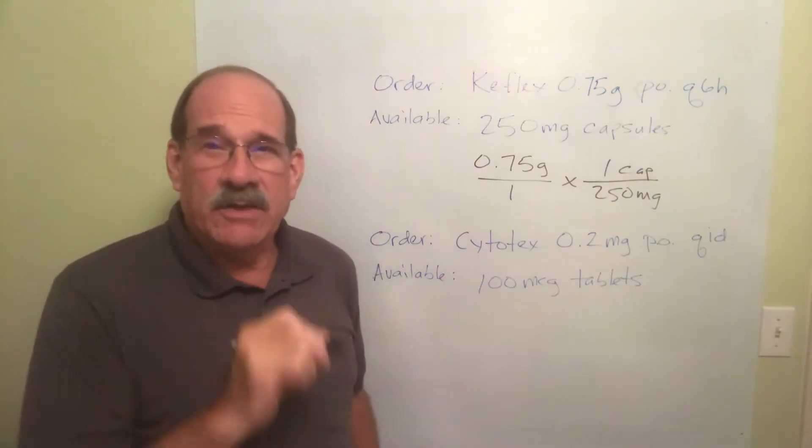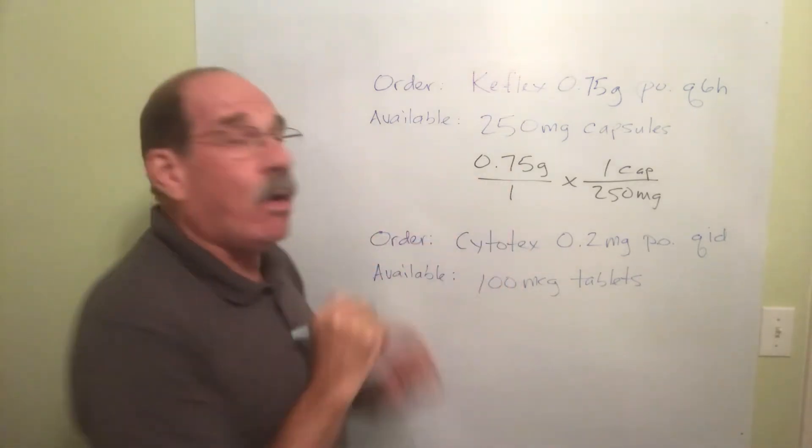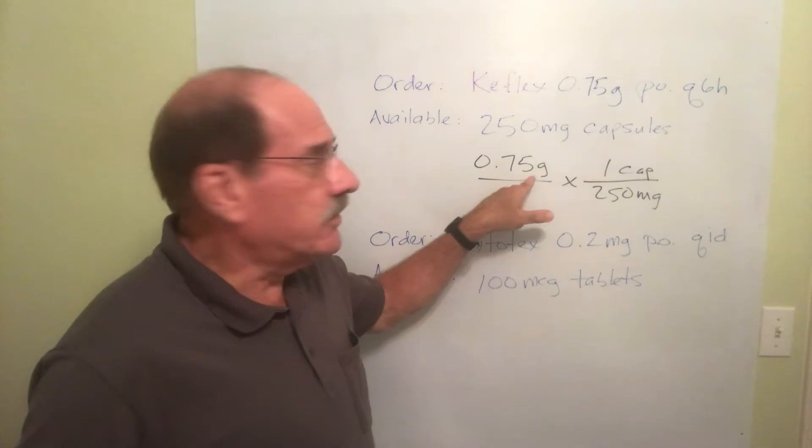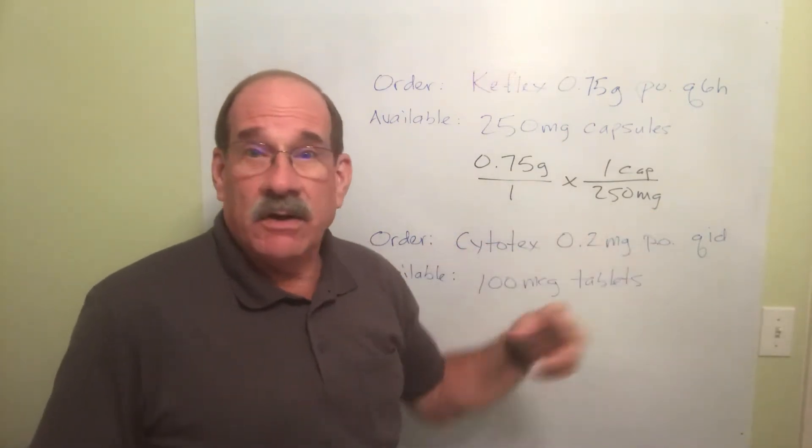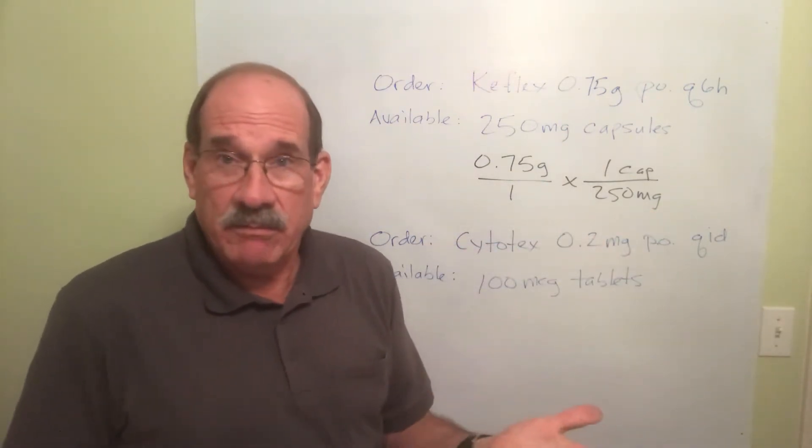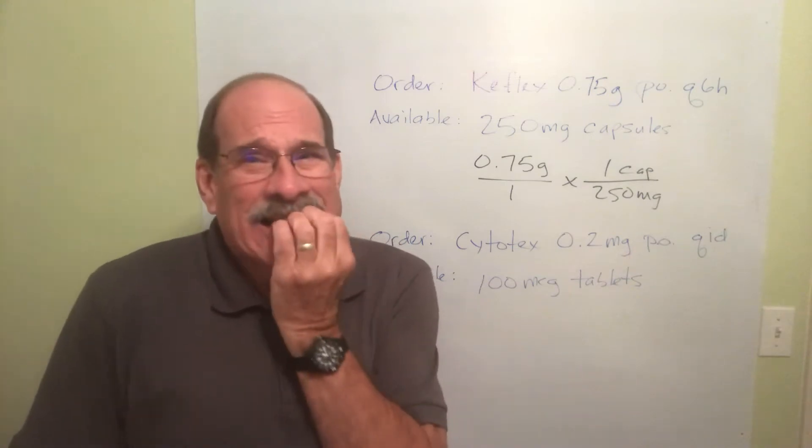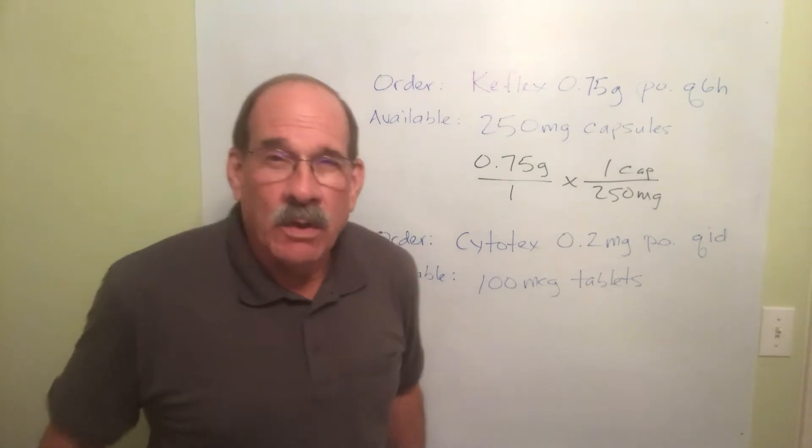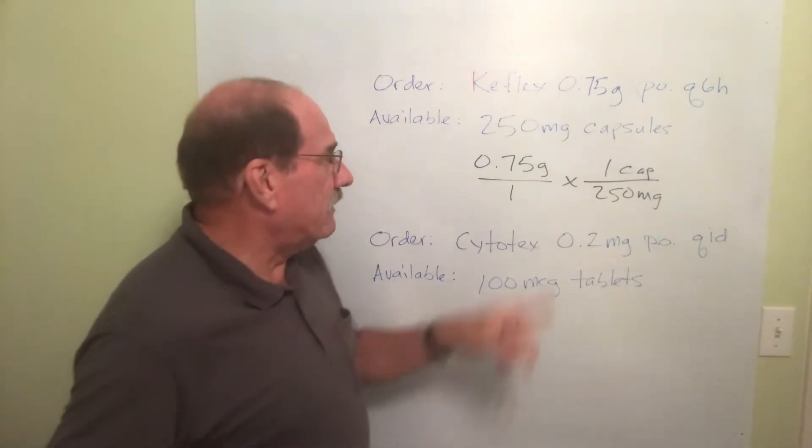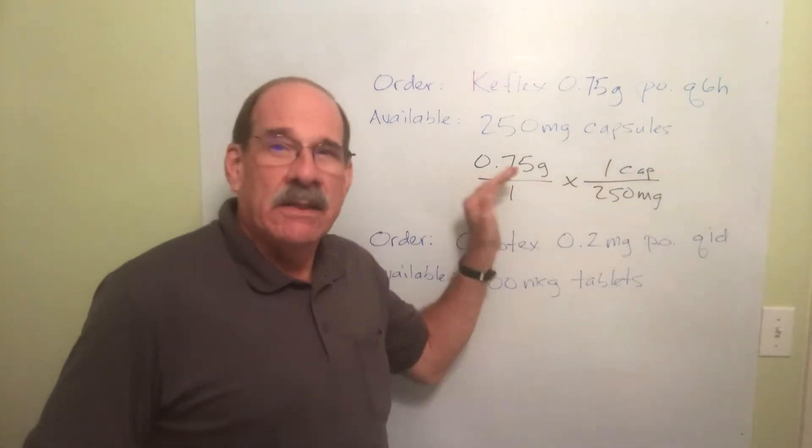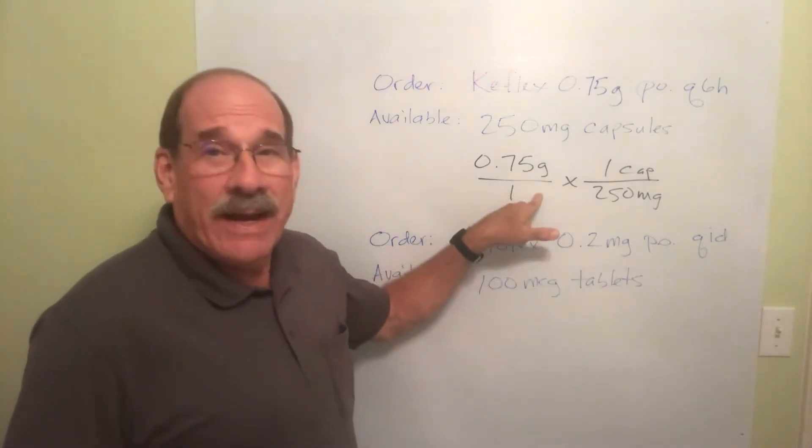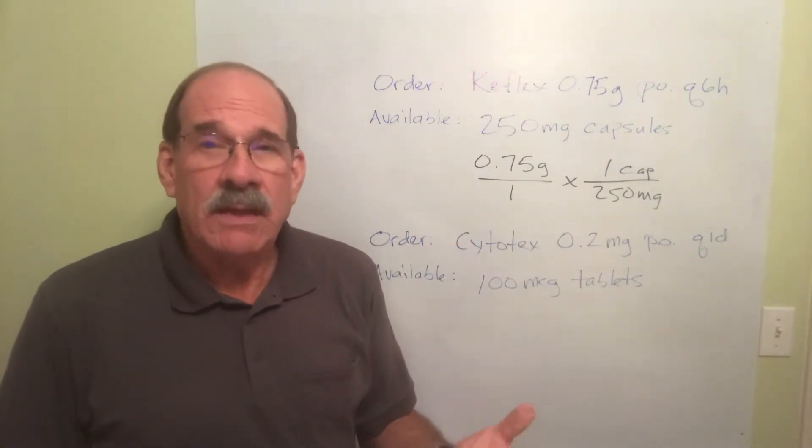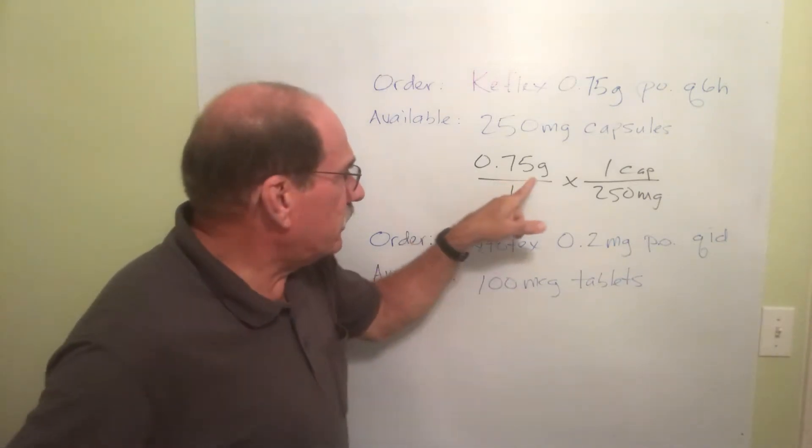Now remember, once it's set up, the next thing you ought to do is cancel out the words. But whoa, I can't cancel words because that's grams and that's milligrams. They aren't the same word, they aren't the same symbol. Oh no, what do I do? This will happen a lot now. Backing up, the ones we did before, we were always saying that was milligrams, that's milligrams, they cancel out. But this is grams and that's milligrams. You cannot cancel.